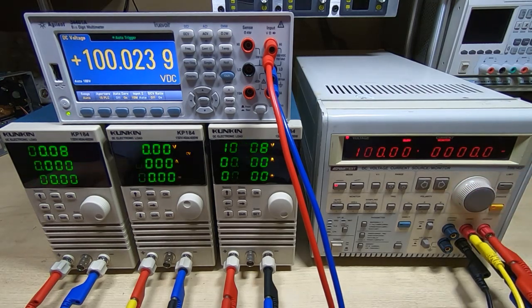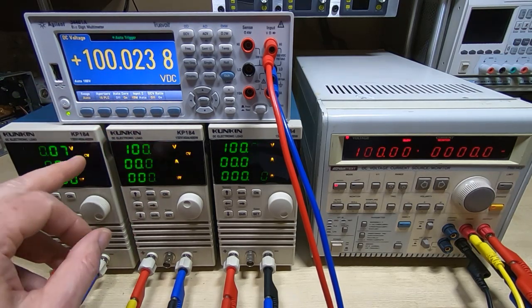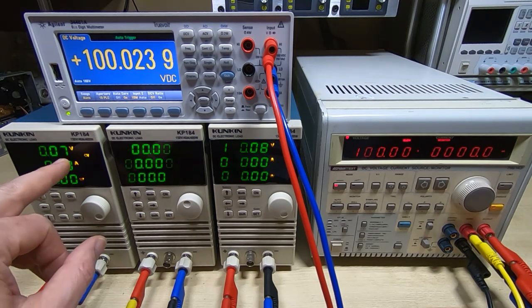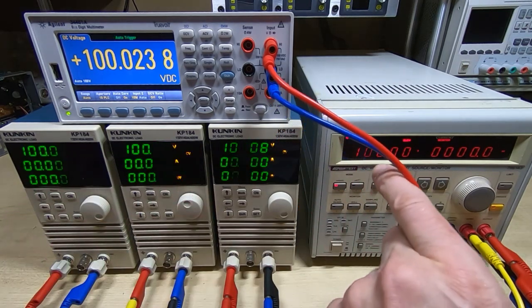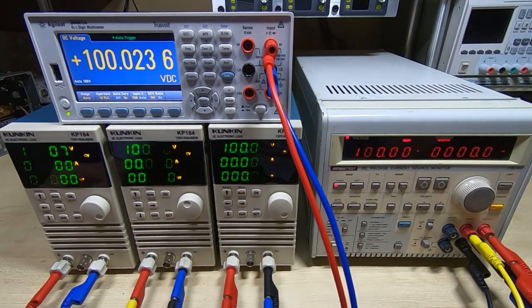So that's 100 volts. You see you're very close to 100 volts and we've lost some of the resolution of course on the Kunkin display, but we can still see we're getting quite a wide variation in readings. It's not terrible but it would be nice if they were a bit closer.